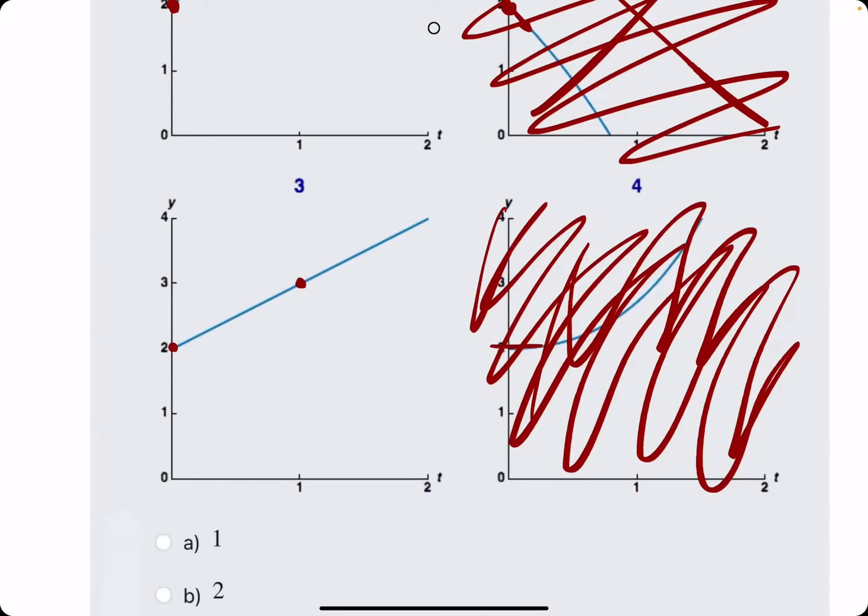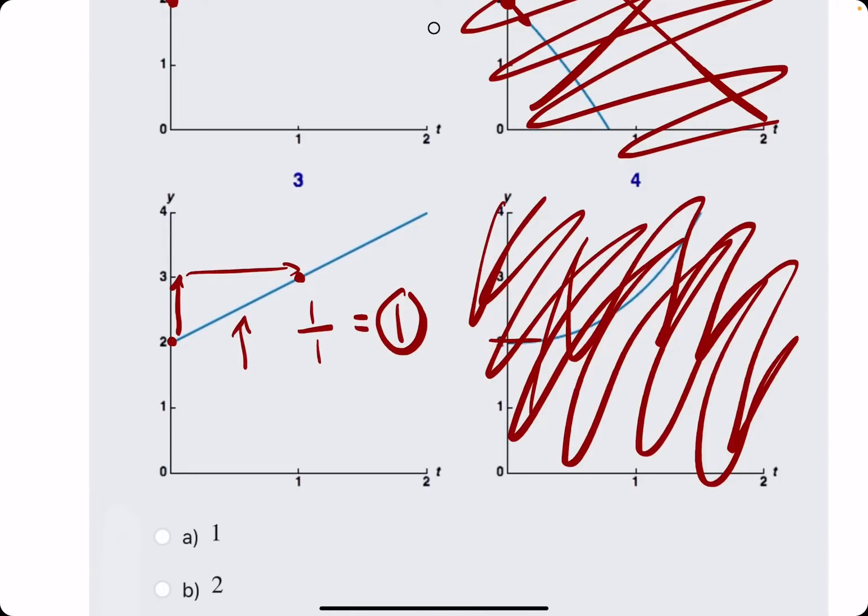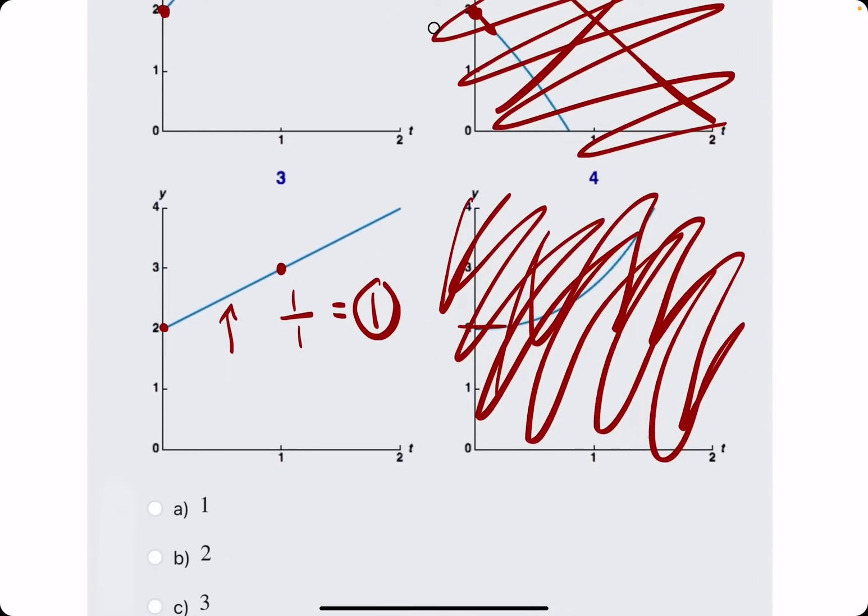That means that its slope is constant the entire time. And so if we just find the slope from this point to this point, rise over run would be rise 1, run 1. So rise over run would be 1 over 1, which is 1. So what that's telling us is that the slope of this segment is just 1. But if the slope is the same the entire time, then that means the slope right at the start is also 1.